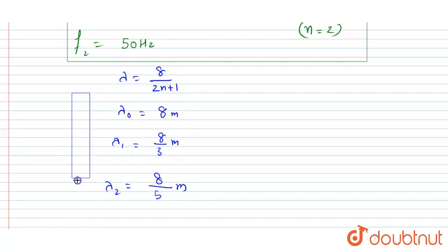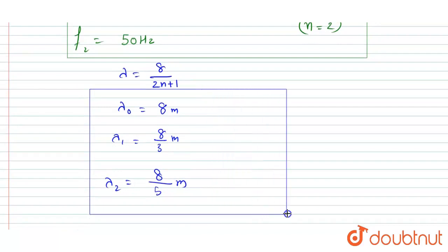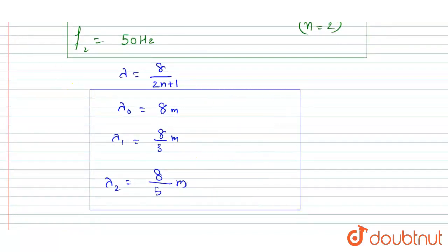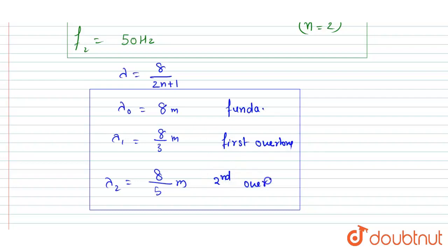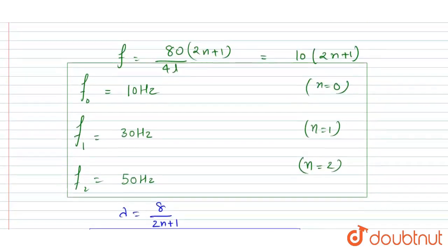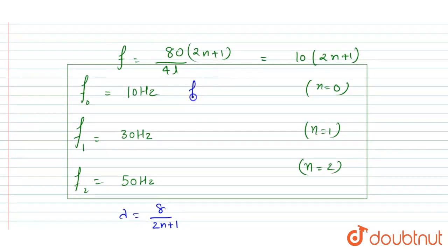So these are the values of lambda: 8 meters for the fundamental, 8/3 meters for the first overtone, and 8/5 meters for the second overtone. The corresponding frequencies are 10 Hz for the fundamental, 30 Hz for the first overtone, and 50 Hz for the second overtone.